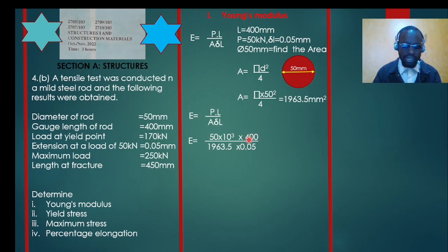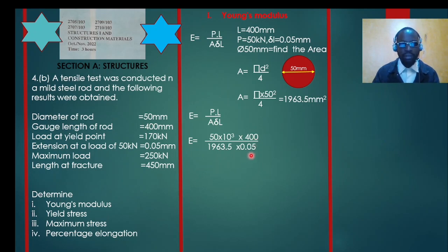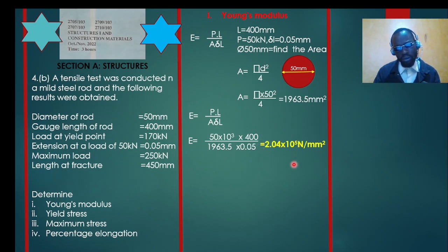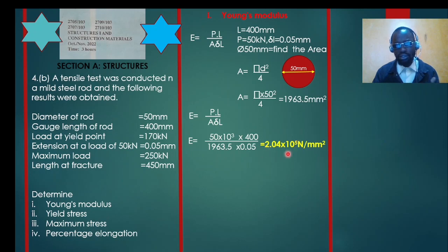Since all lengths are already in millimeters, we leave them as is. Substituting all values into the Young's modulus formula and computing correctly gives E = 2.04 × 10⁵ N/mm². The unit of Young's modulus is newtons per millimeter squared. In engineering, we use standard form because the number would otherwise be very large. That is the answer for Young's modulus.